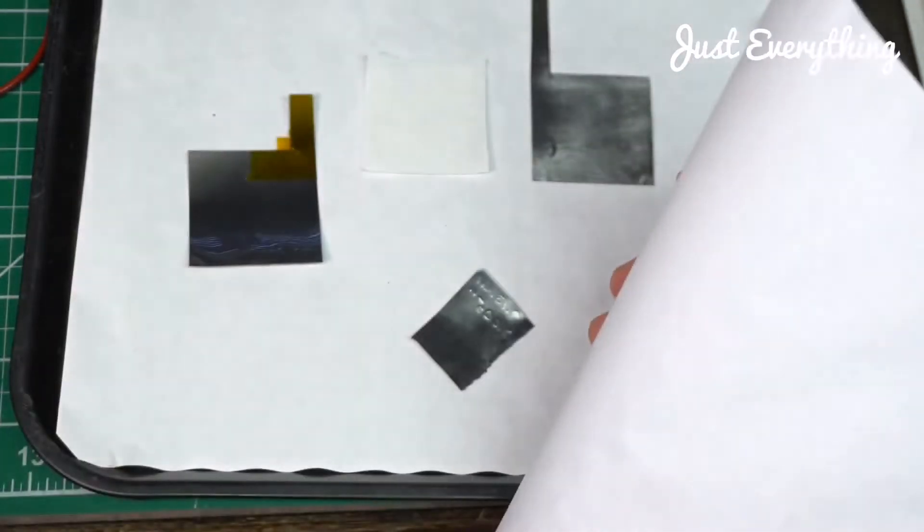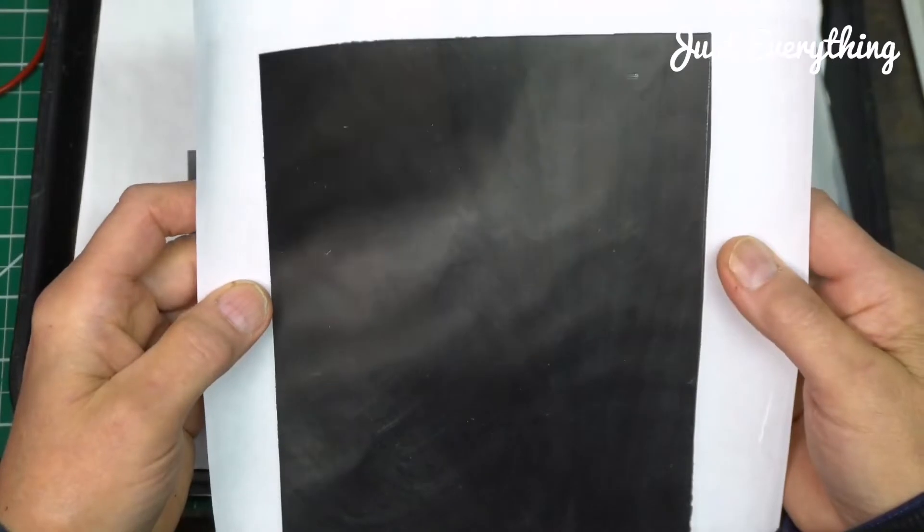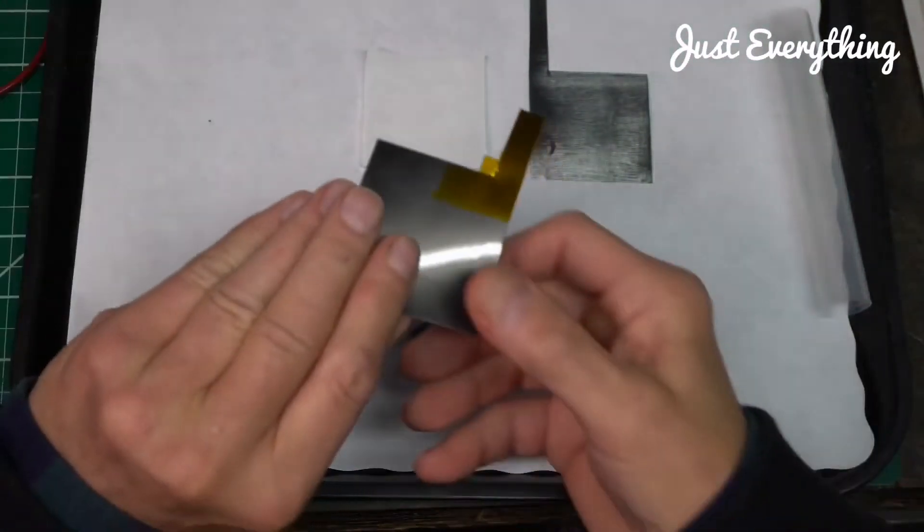And it makes it nice because it's actually protected on one side by paper, until you need it to cut it out, and you have your nice cathode material.